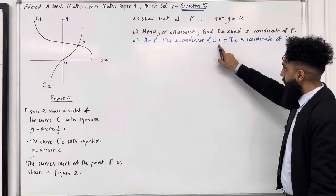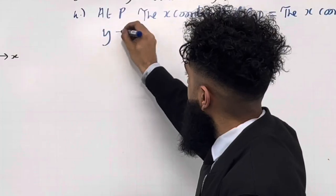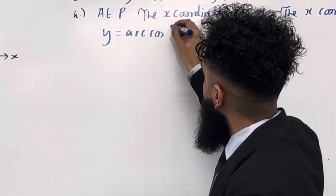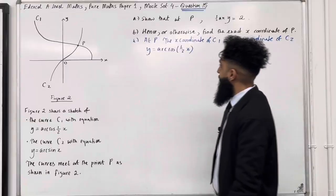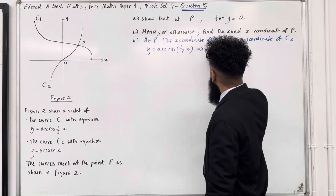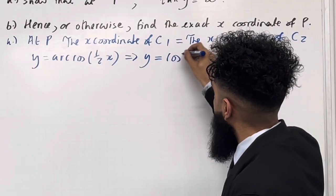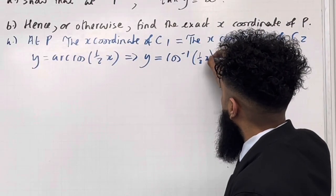Let's start off with the curve C1. The equation is y = arccos(½x). I'm going to make x the subject. This implies that y = cos⁻¹(½x).